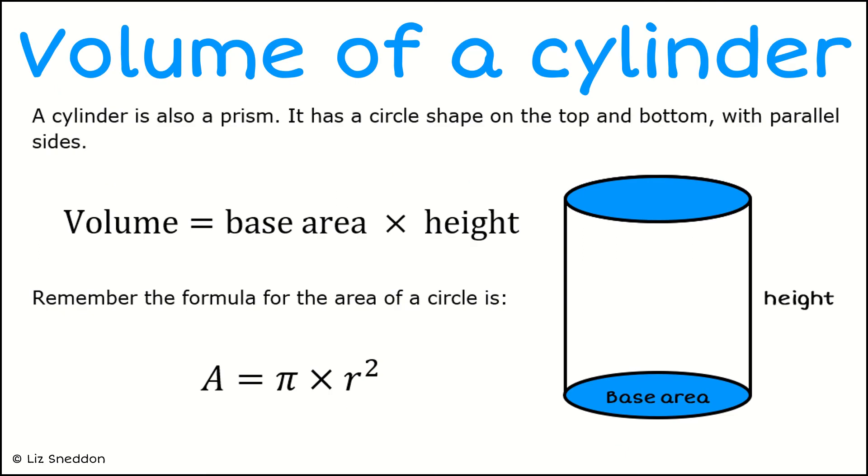When we talk about volume of cylinders, we've got the key idea - it's still a prism, and so we want to use the formula base area times the height. The base area is a circle, so we've got to remember the area for a circle is pi times the radius squared.